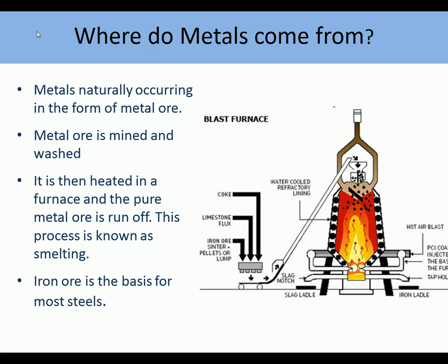Where do metals come from? Metals are naturally occurring in the form of metal ore. Metal ore is mined and washed, then it is heated in a furnace and pure metal is run off. This process is known as smelting. Iron ore is the basis for most steels.